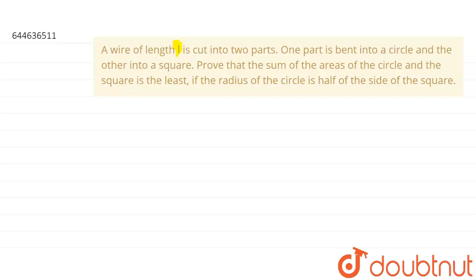A wire of length L is cut into two parts. One part is bent into a circle and the other into a square. We need to prove that the sum of the areas of the circle and the square is least if the radius of the circle is half of the side of the square.